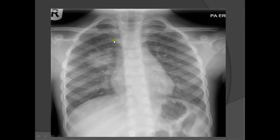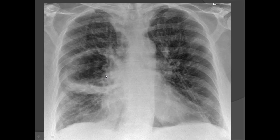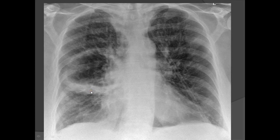Lung abscess: whenever you see an air-fluid level within a cavity in the lung, always think of lung abscess. Obtain an additional lateral view to confirm whether it is a lung abscess or empyema. Another thick-walled cavity with an air-fluid level, along with multiple reticulonodular shadowing and patchy consolidations, again represents a lung abscess.